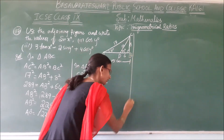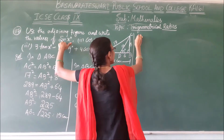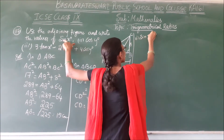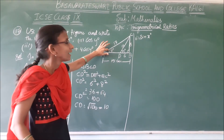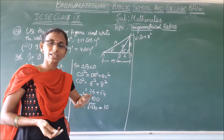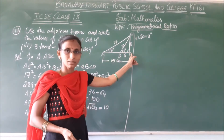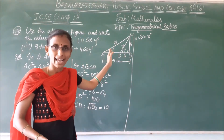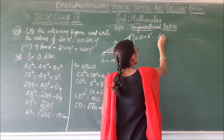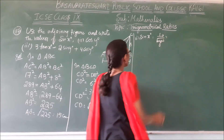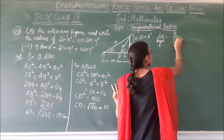Now, what do we need to find? First one is sin x. Sin x means perpendicular by hypotenuse, so the perpendicular for this angle is BC, which is the opposite side. Sin x equals BC by AC, so that is 8 by 17. This will be the sin x value.